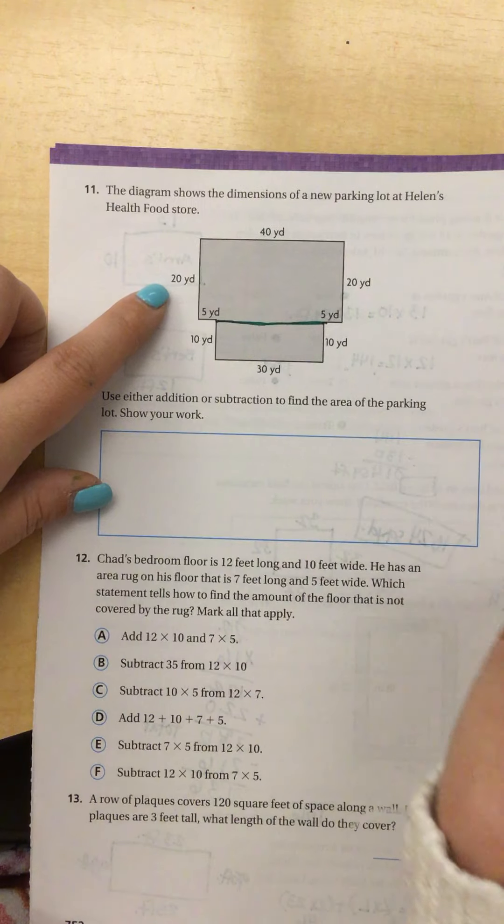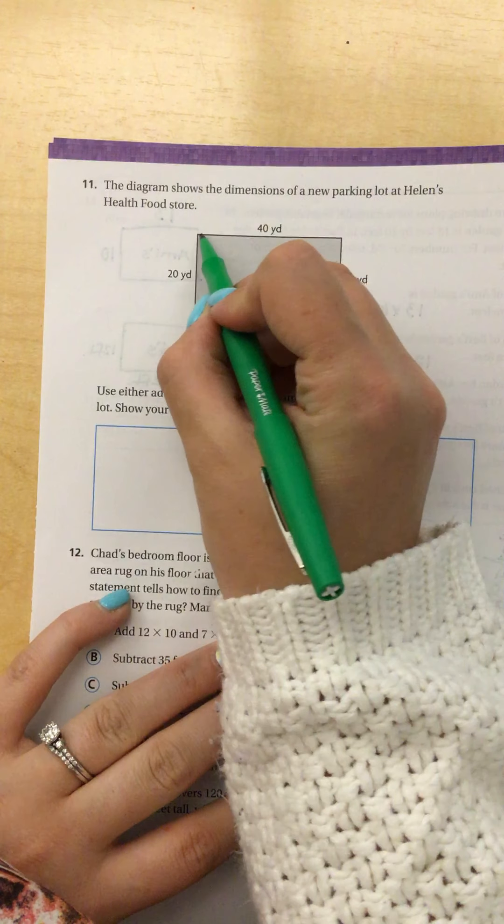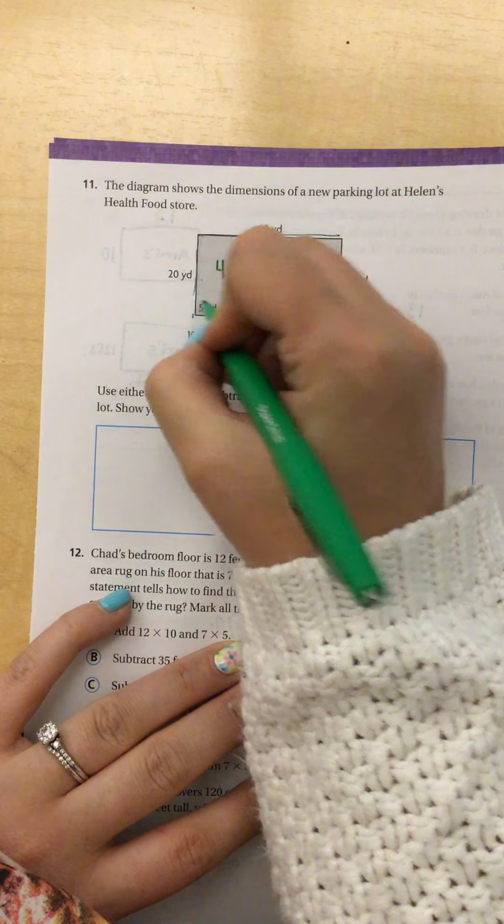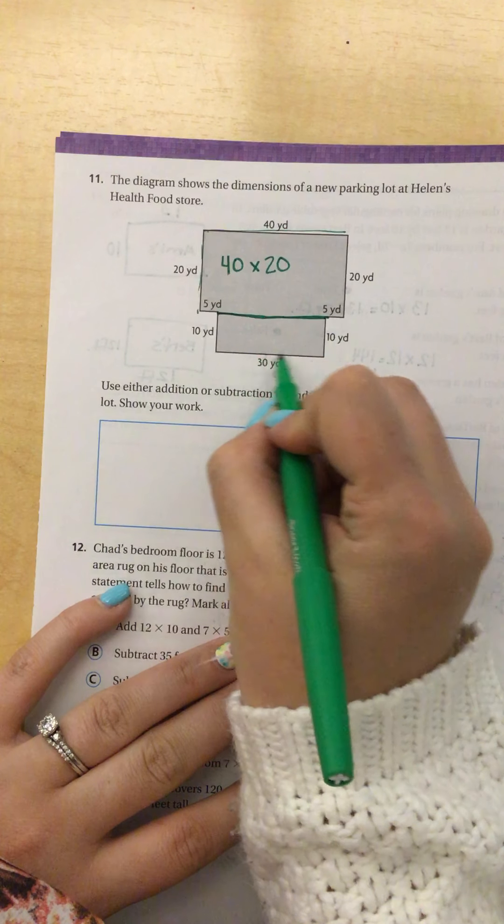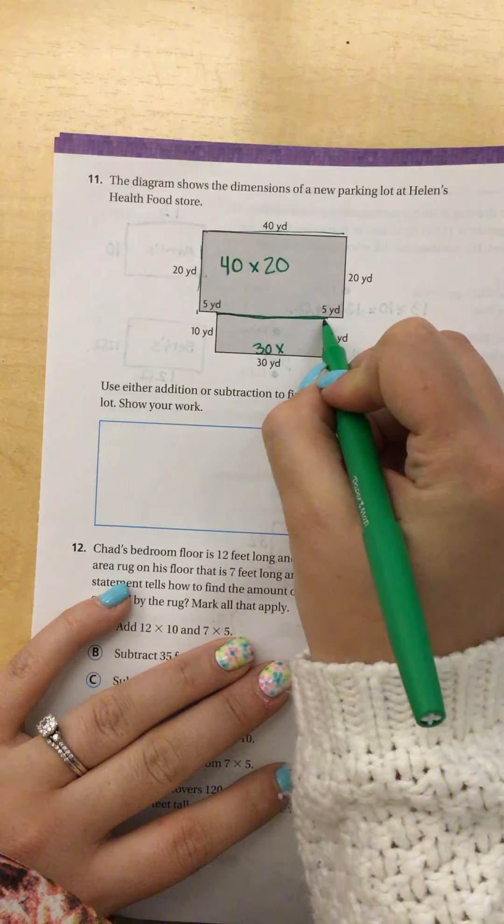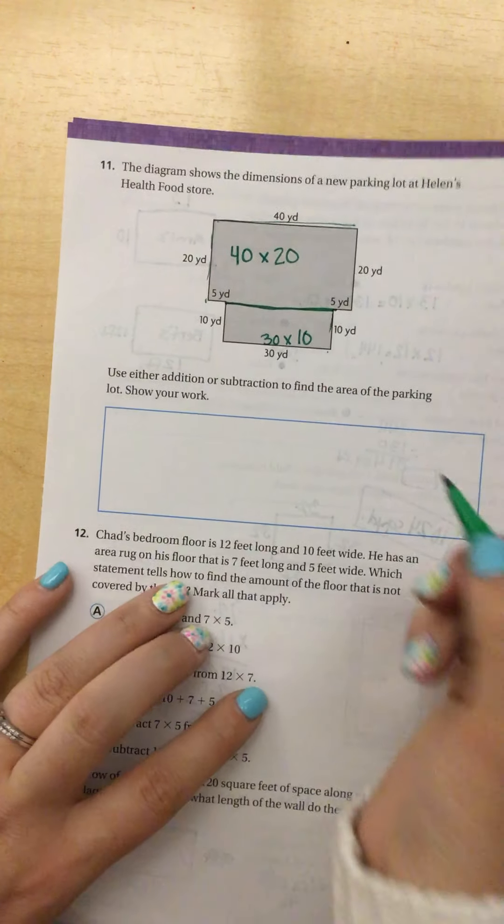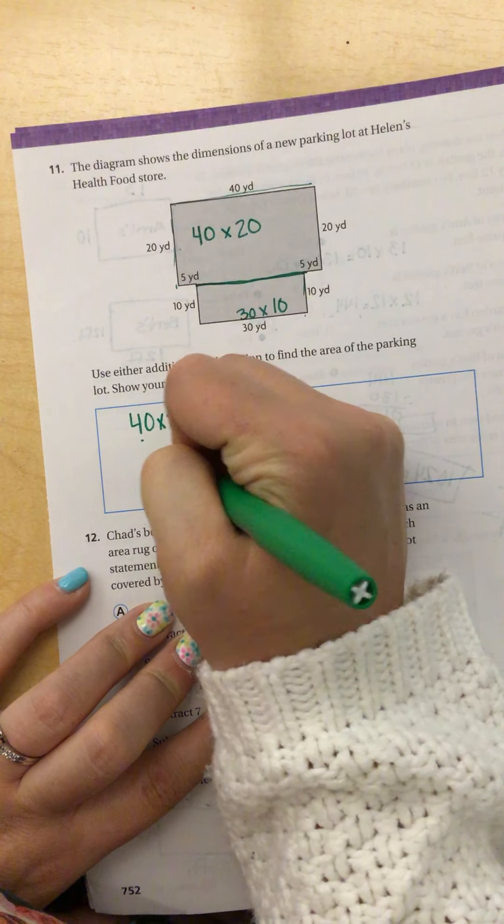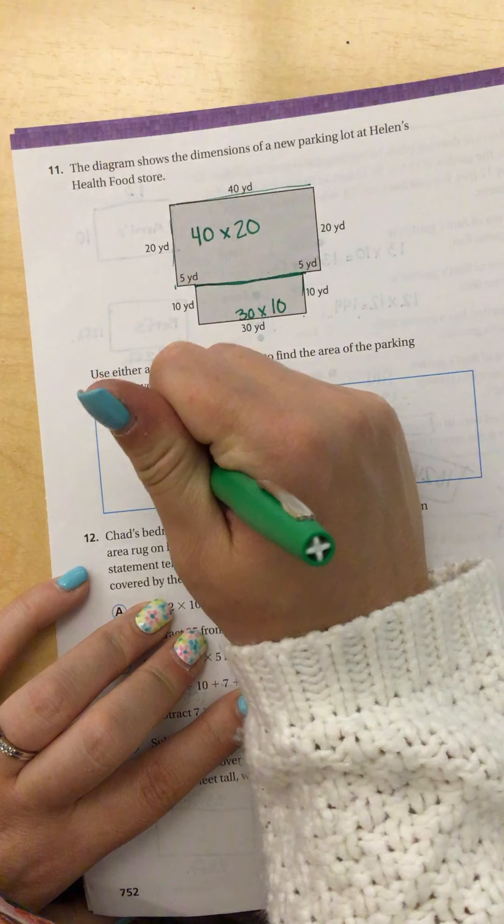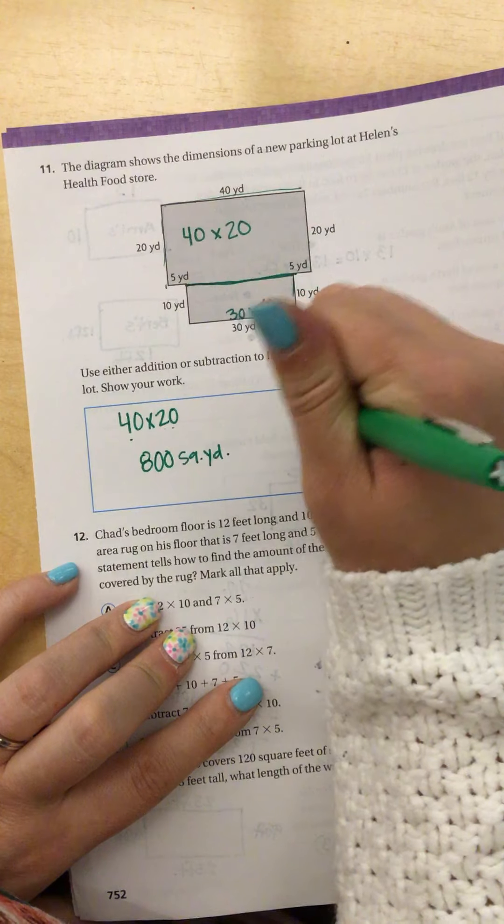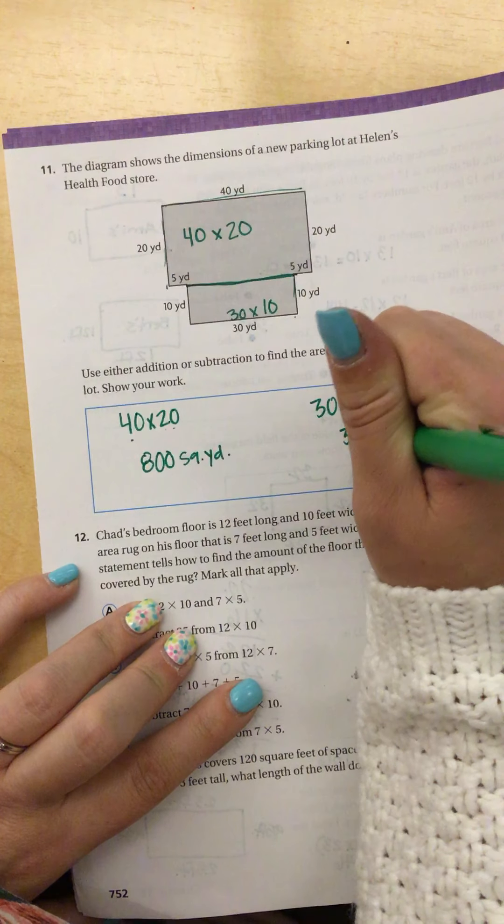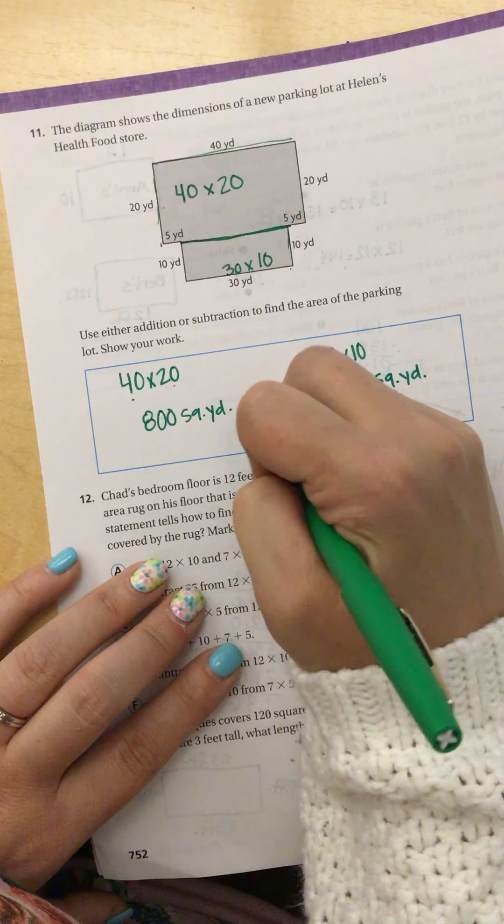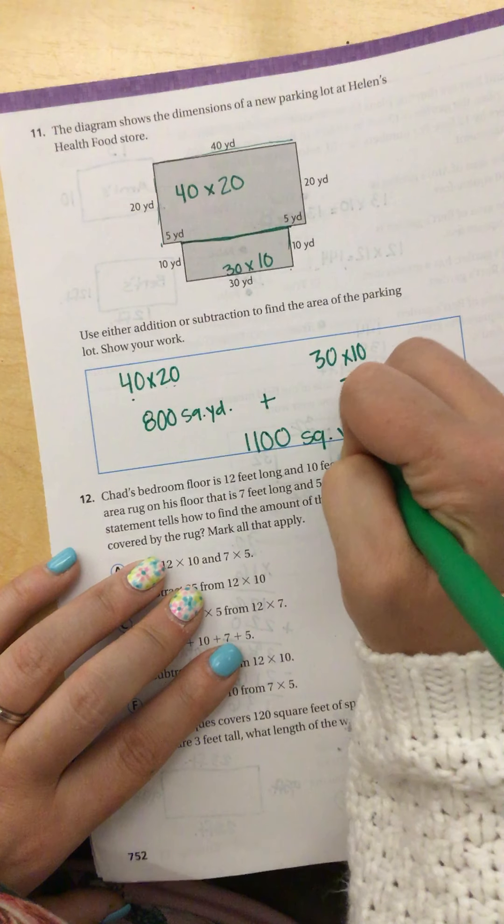Well, the base of this one looks like it's 40 times my height of this rectangle is 20. And on this one, I know that this piece is 30 times, oh, this height is 10. So to find the area, I'm going to do 40 times 20. 4 times 2 is 8 with 2 zeros because we're in the 10 times 10. So that's 800 square yards. And then 30 times 10 is 300 square yards. 800 plus 300, when I add those together, 8 plus 3 is 11, and we have 100, so 1,100 square yards.